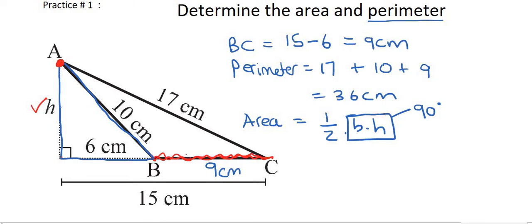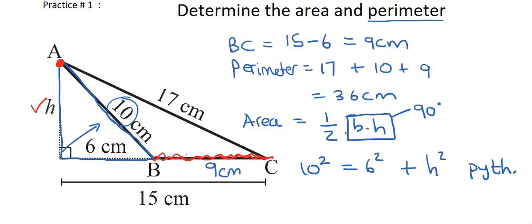So we know that Pythagoras tells us that this 10, which is opposite the 90, that one to the power of 2 would be equal to 6 to the power of 2 plus h to the power of 2. And your reason for that is Pythagoras. In the previous lessons, I wasn't really worrying too much about reasons because we were just learning, but now we're actually doing proper questions.